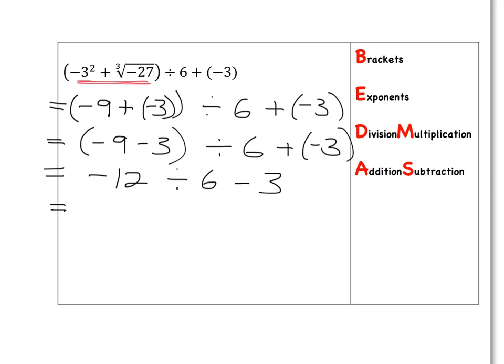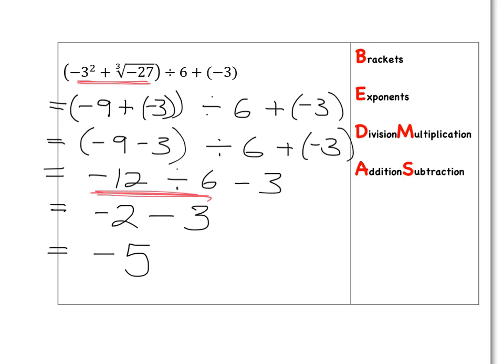We've got rid of all brackets and exponents, so the next step is to deal with division and multiplication. We must deal with this division before we go on to the subtraction: negative 12 divided by 6 gives negative 2, because a negative divided by a positive is negative. Then you've still got to subtract 3: negative 2 subtract 3 means you take three steps further down, ending at negative 5.